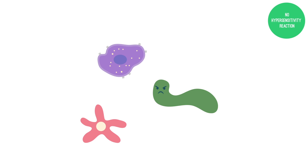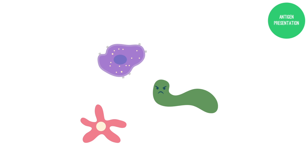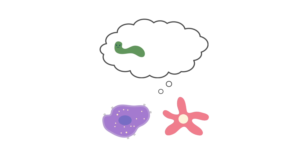When you first encounter something foreign, typically there's not a hypersensitivity reaction. This is because your immune system hasn't had time to figure out exactly what is going on — this process is actually called antigen presentation. Once your immune system has had time to analyze and figure out whether something is good, bad, or ugly, it learns to create and be prepared for the next time it sees this antigen.